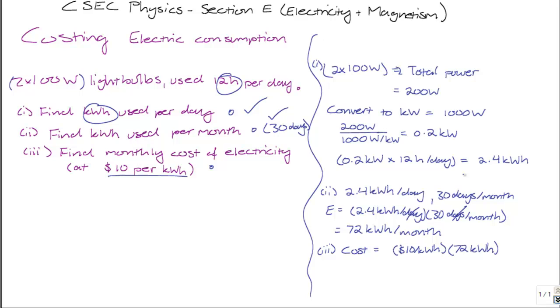Remember that this is the total number of kilowatt hours used per month. And this gives us a value or a cost of $720 for every month of electric usage, which is our final value.